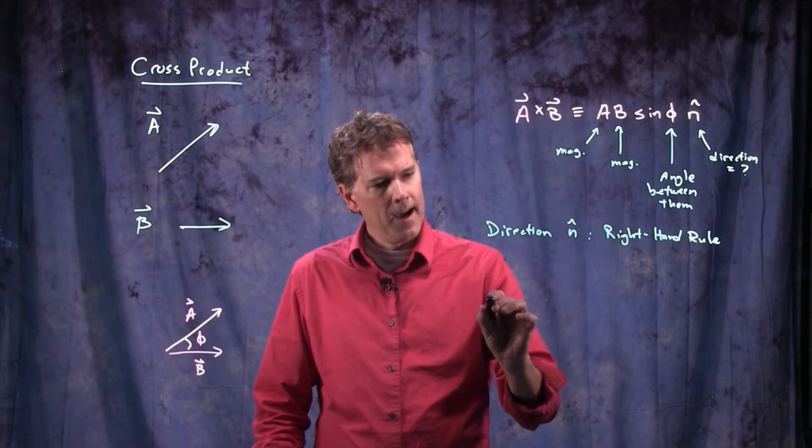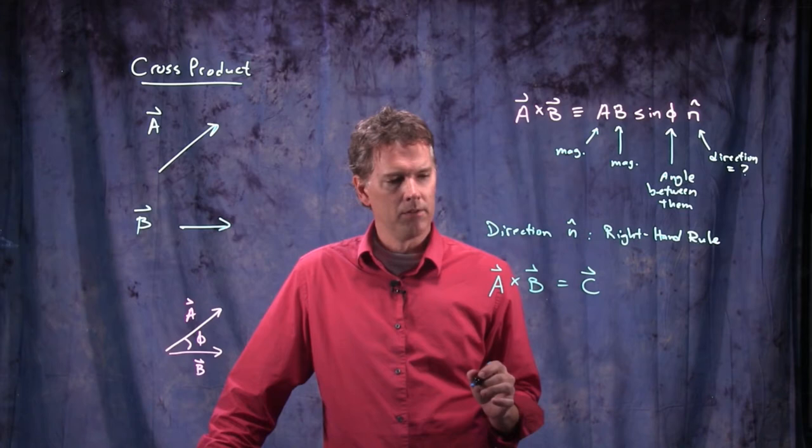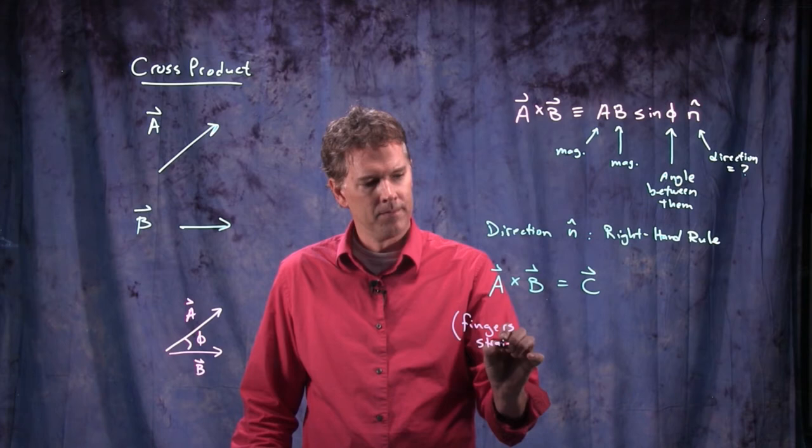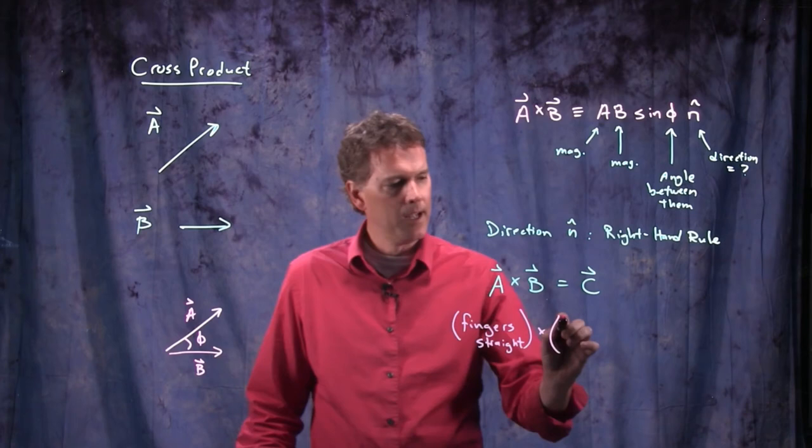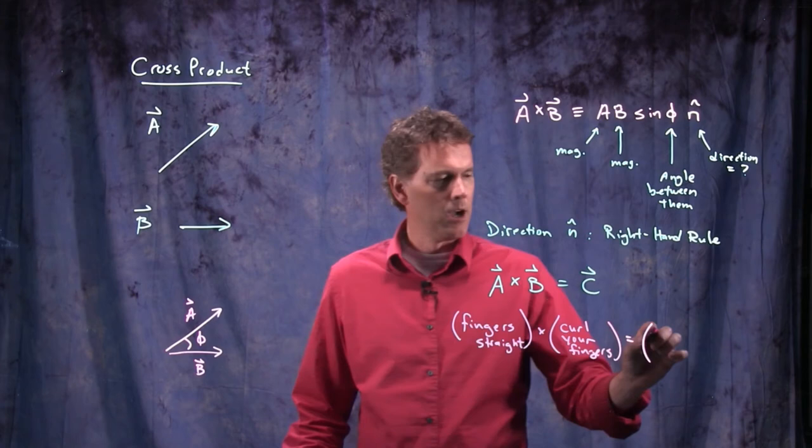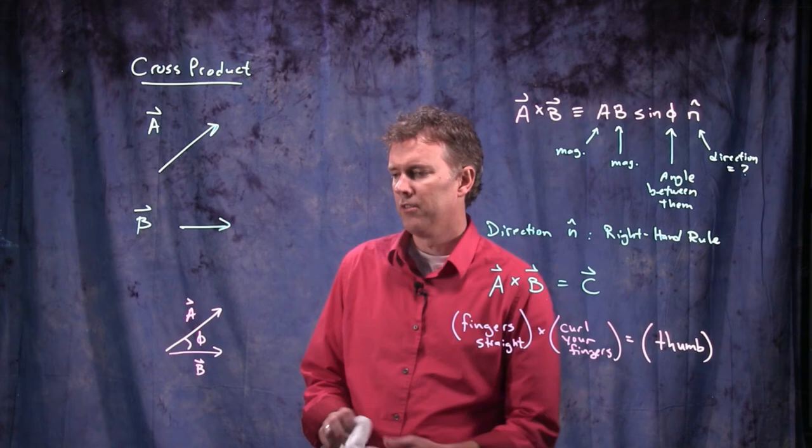The right hand rule is the following. If I have A cross B, and that's going to equal some vector C, the way you figure out the direction is the following. Okay. A, you do your fingers straight. B is you curl your fingers. C is the direction of your thumb. And it's called the right hand rule because you have to do it with your right hand. So let's see if we can figure it out for this simple example that we just talked about.